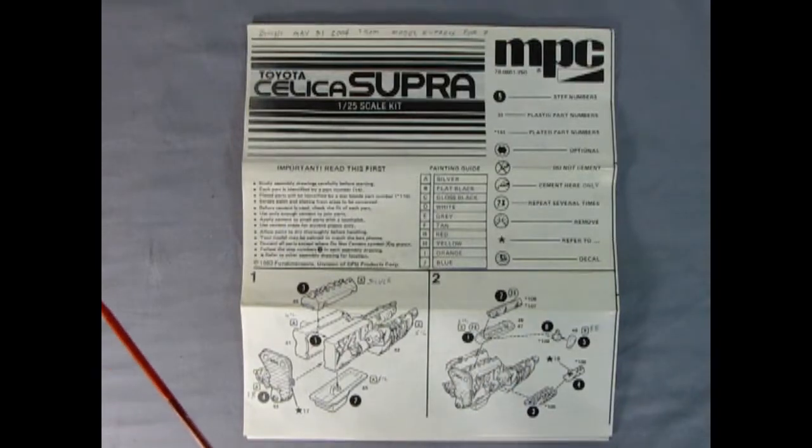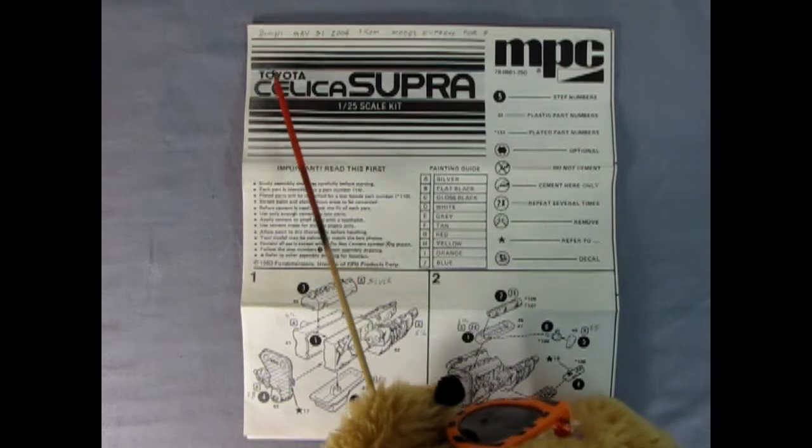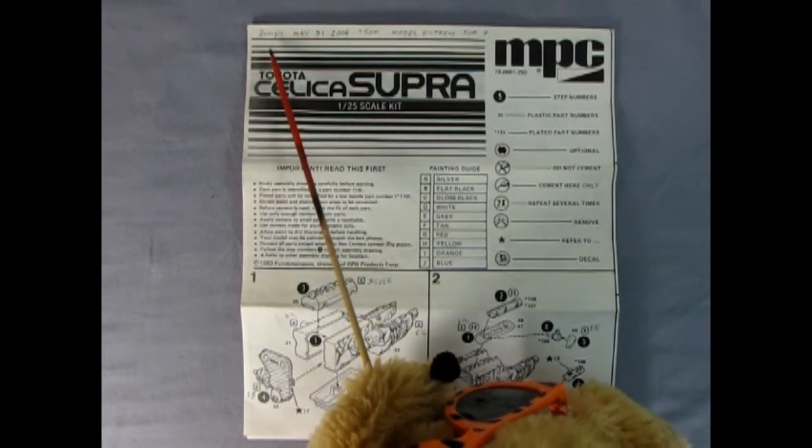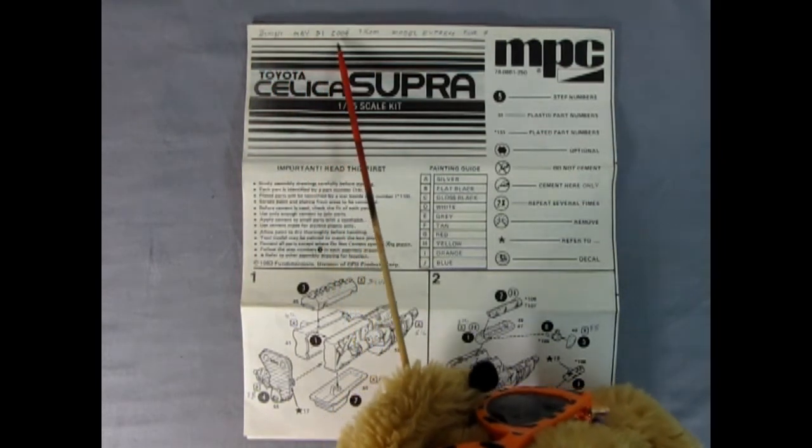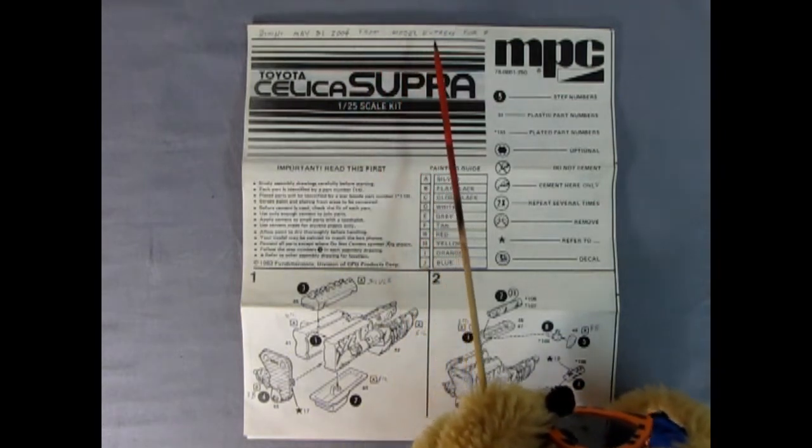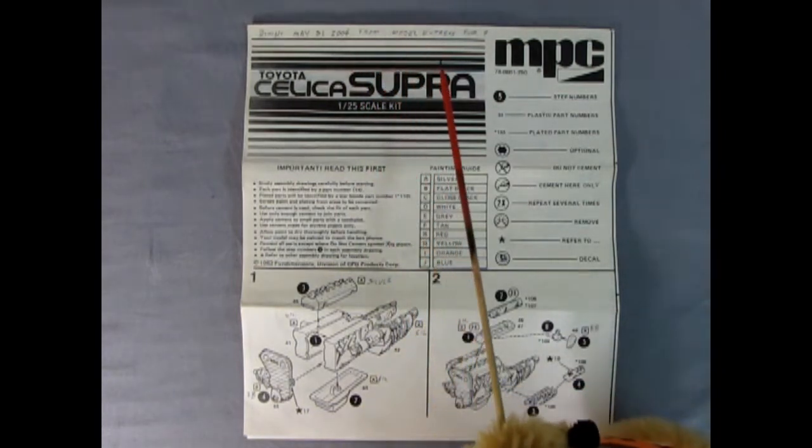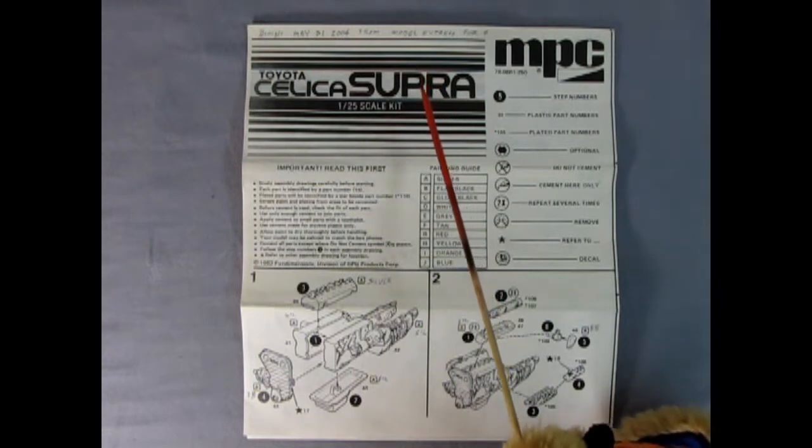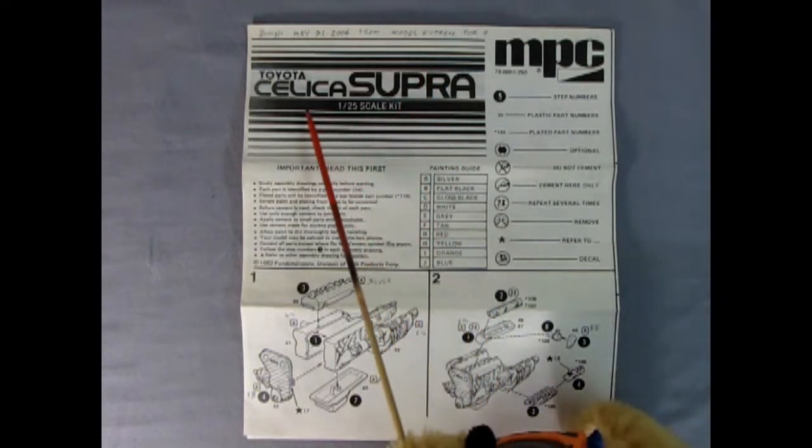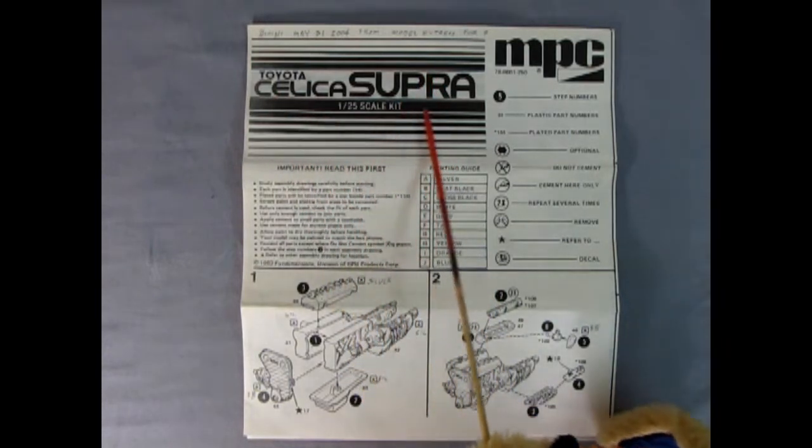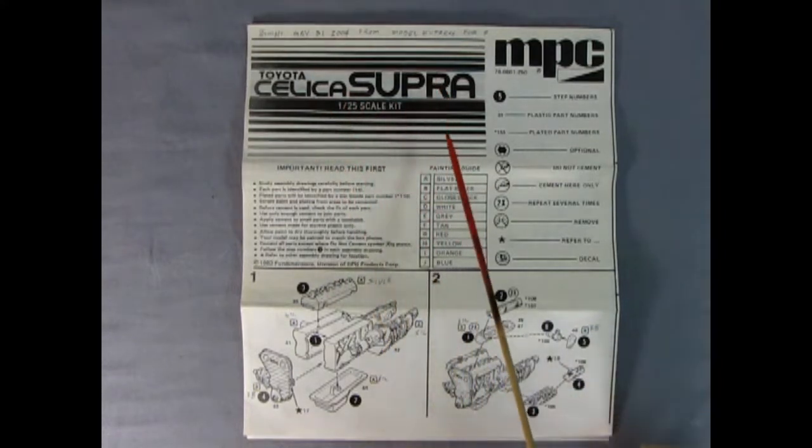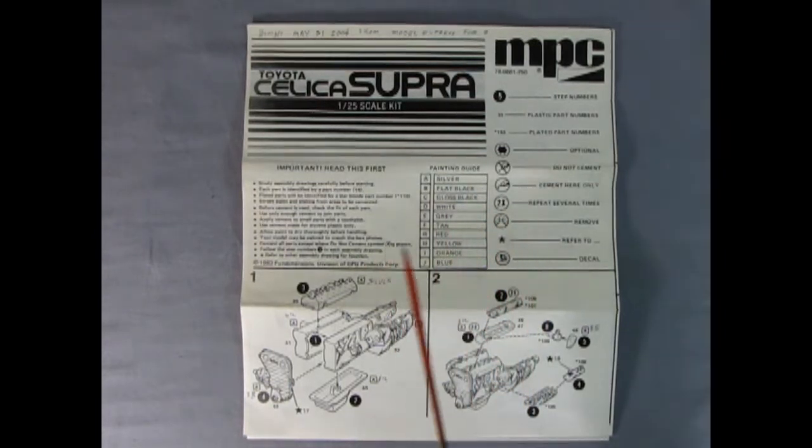Hello everybody, this is Danny the Dog again, and I get to show you the instruction sheet which is really cool. Up here we've got a note that says this was bought May 31st 2004 from Model Express. Do you guys remember that website? So here we have the nice Toyota Celica Supra in the original font back then. We've got the nice paint guide here. You'd need silver, flat black, gloss black, white, gray, tan, red, yellow, orange, and blue in order to complete this model.